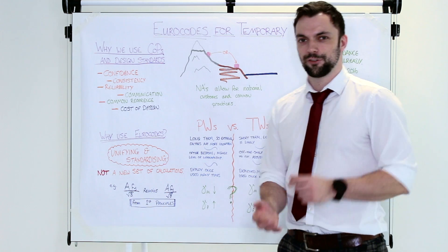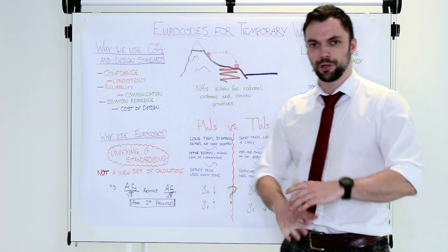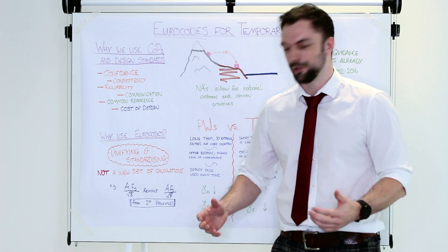With the permanent works, you deploy it once. You build it once and you use it many, many times. And with temporary works, you deploy it many, many times, but you'll tend to only use it a few times on each deployment.